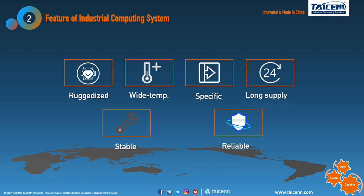When we talk about industrial computing systems, we know most features are ruggedized, wide temperature, specific, long supply, stable, and reliable — because it is not a consumer computer at home under air conditioning. It is an industrial computer on-site in a harsh environment.